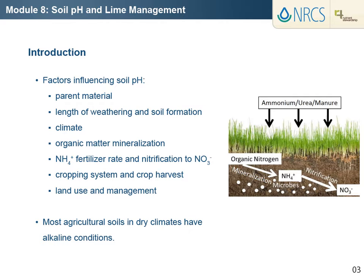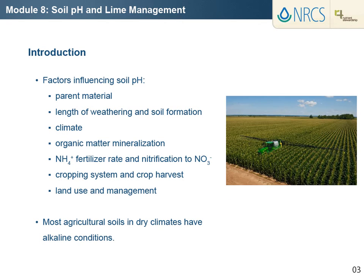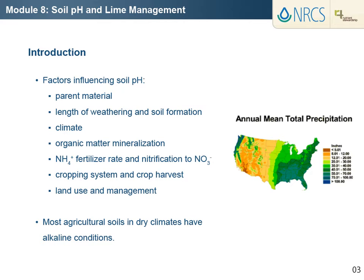Nitrification of ammonium to nitrate from any fertilizer or manure source, or mineralization and subsequent nitrification of organic nitrogen compounds such as from manure, produces hydrogen ions, thus lowering soil pH. Frequency of crops in a rotation that require nitrogen application, and frequency of crops with high nitrogen fertilization requirement, will affect acidification rate. Most agricultural soils in dry climates have alkaline conditions with average pH values ranging from 7 to 8.5. This is primarily due to the presence of basic cations associated with carbonates and bicarbonates found naturally in those soils and irrigation water.